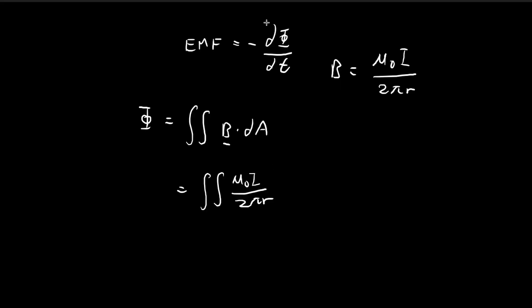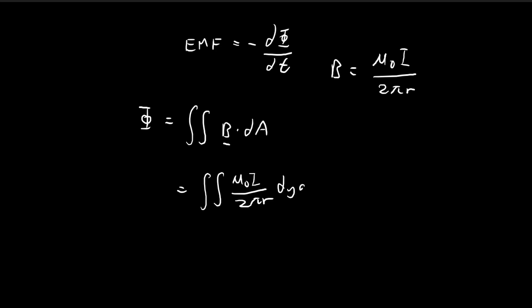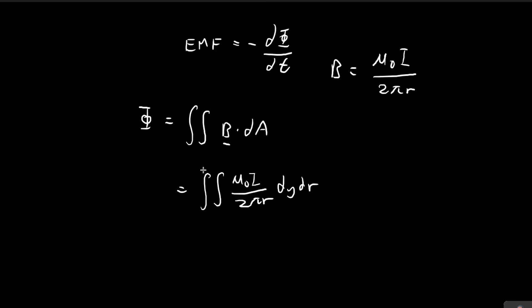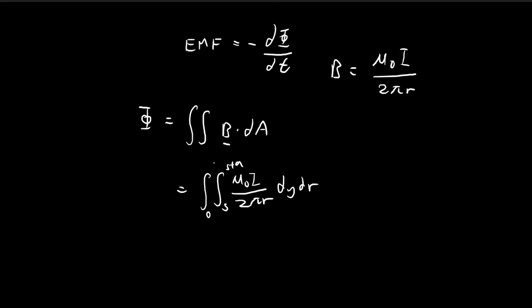So we have, for our dA, so essentially we're integrating across this square region. So we have dy dr. And r is stretched from s all the way to s plus a. And for y, it stretches from 0 to a. So essentially this draws out this entire square over here.